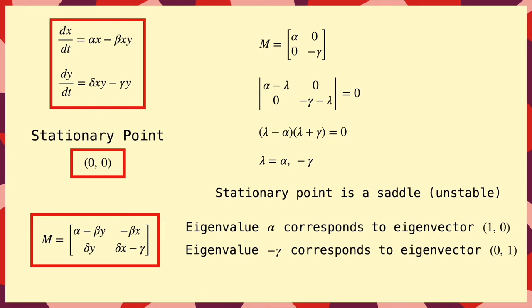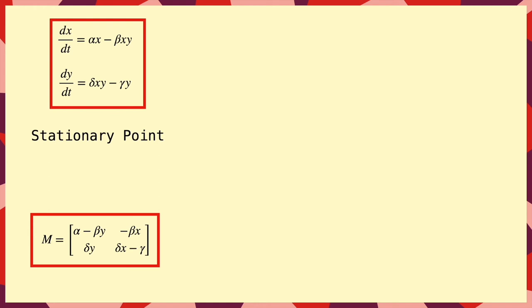And the negative eigenvalue, minus gamma, corresponds to the eigenvector in the y-direction, and this means that if we have a population of only predators, without any prey to eat, they'll die out, as we expect.